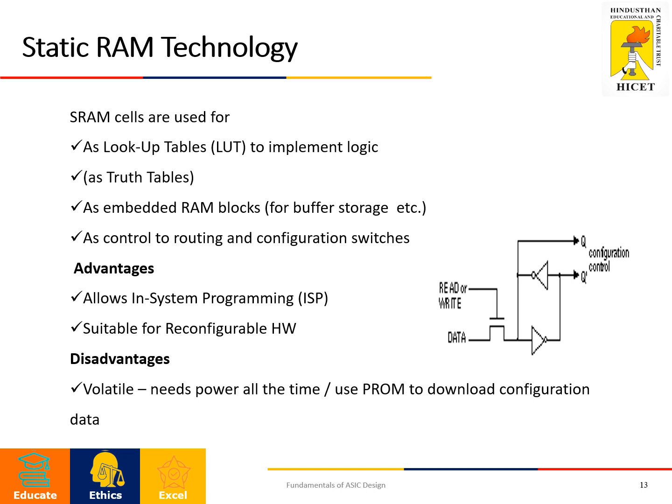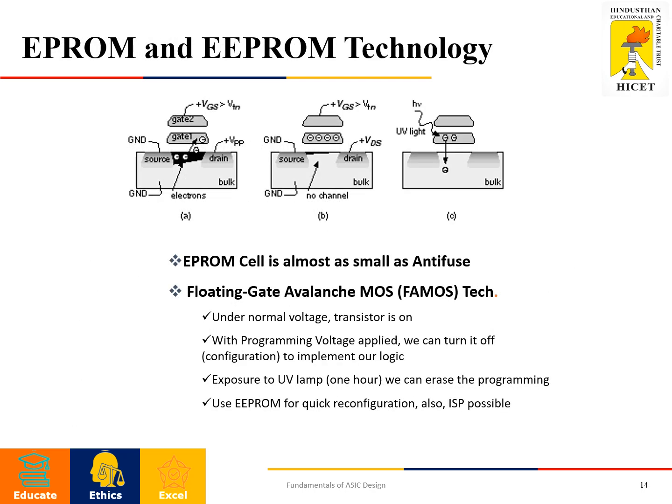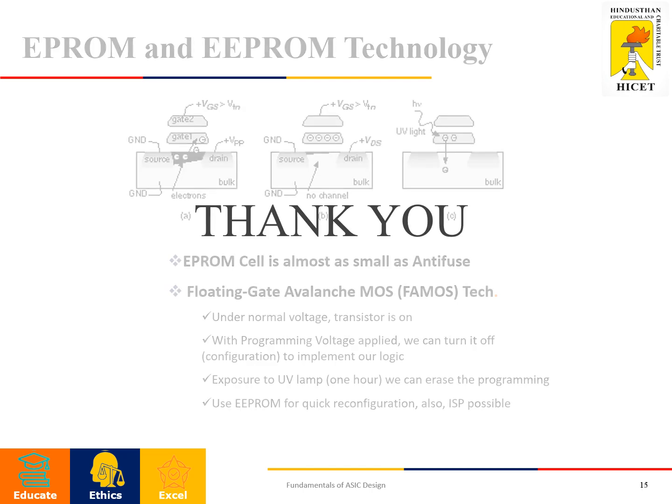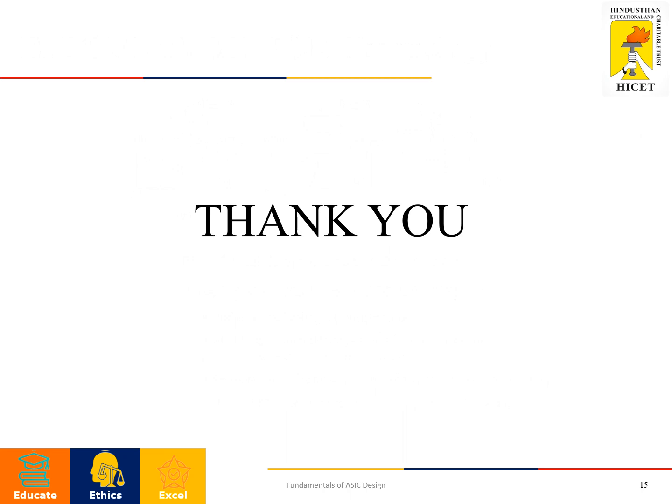EEPROM and EPROM technology uses cells almost as small as antifuse, employing floating gates — the FAMOS (Floating-gate Avalanche-injection MOS) technology. Under normal voltage the transistor is on. When programming voltage is applied, it can be turned off to implement logic. For EPROM, exposure to UV light erases the programming. EEPROM allows reconfiguration and in-system programming (ISP) is also possible. The cell has two gates: one is the control gate and the other is the floating gate, which can be erased using UV rays.